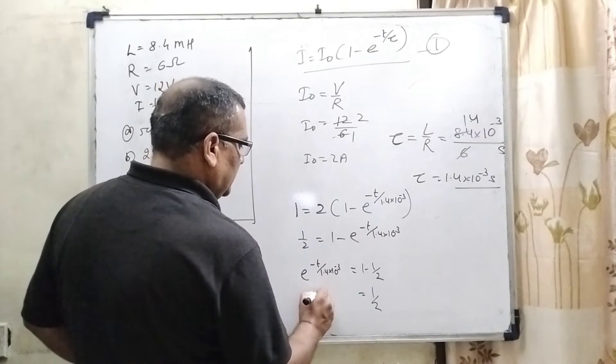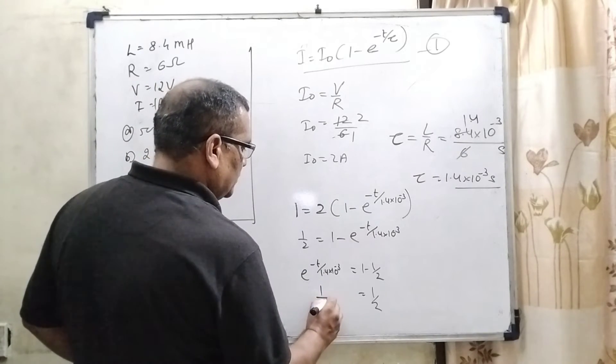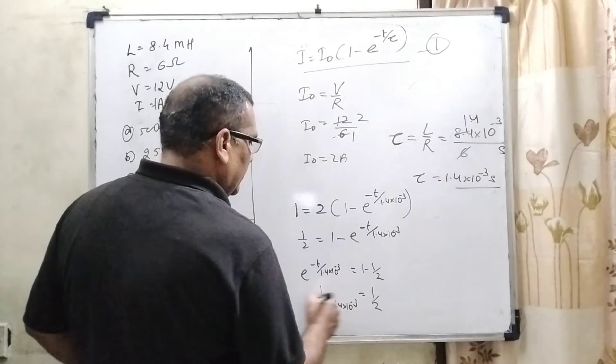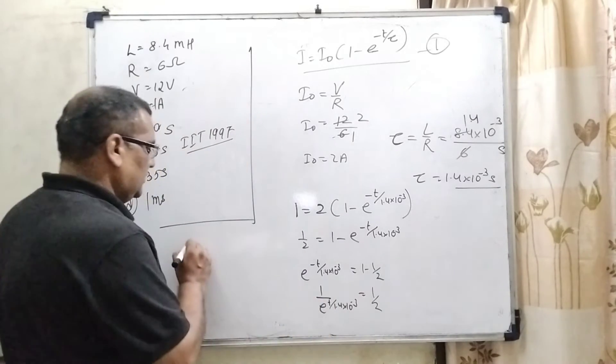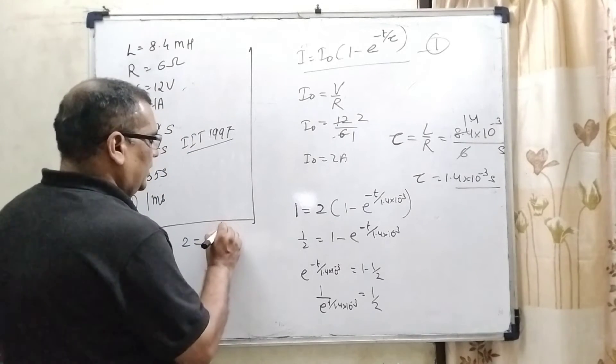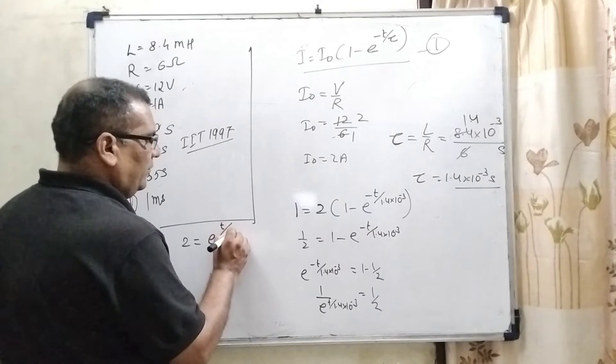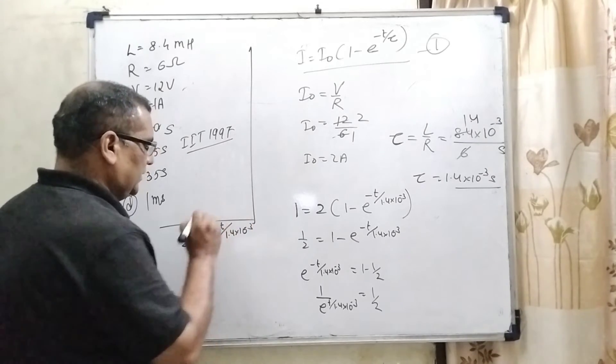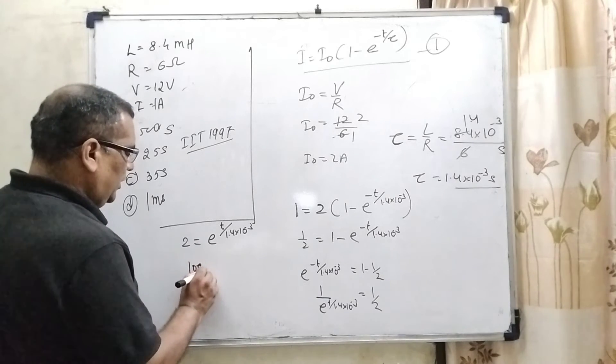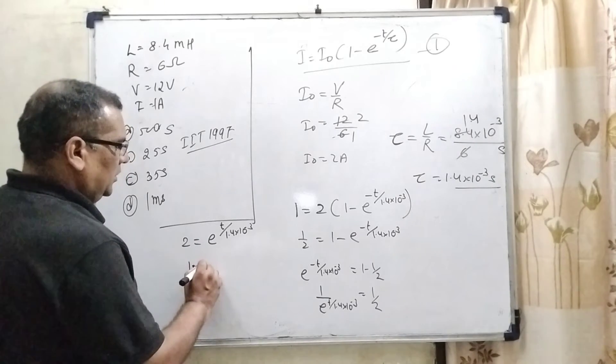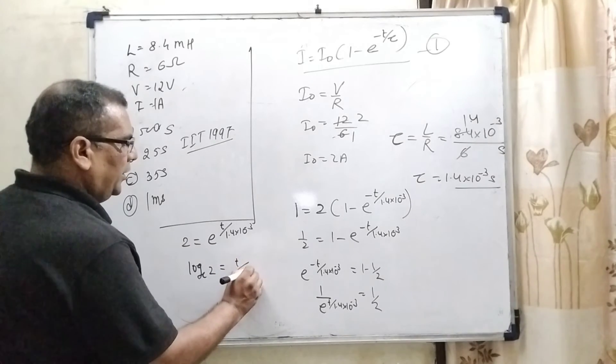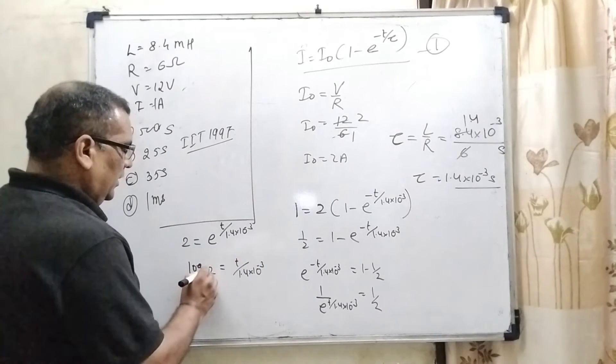Now, e raised to power minus t, it can be written as 1 upon e raised to power t by 1.4 into 10 raised to power minus 3. Transposing all these terms, it becomes 2 equal to e raised to power t upon 1.4 into 10 raised to power minus 3. It can be written as log e 2 equal to t upon 1.4 into 10 raised to power minus 3.